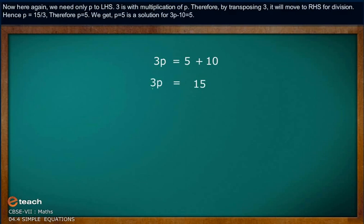Now here again, we need only p on the left-hand side. 3 is multiplied with p. Therefore, by transposing 3, it will move to the right-hand side for division. Hence, p equals 15 divided by 3.